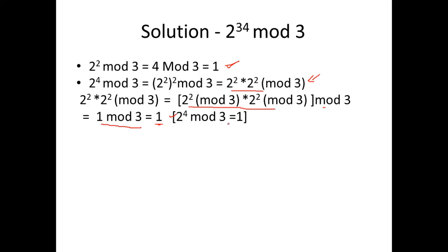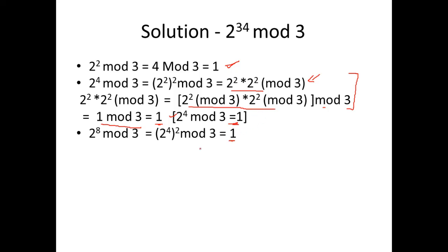Next, compute 2⁸ mod 3. It is (2⁴)² mod 3 = (2⁴ × 2⁴) mod 3. By the multiplication property: (2⁴ mod 3) × (2⁴ mod 3) mod 3 = 1 × 1 mod 3 = 1. So 2⁸ mod 3 = 1. Continuing, 2^16 mod 3 = (2⁸ × 2⁸) mod 3 = (2⁸ mod 3) × (2⁸ mod 3) mod 3 = 1 × 1 mod 3 = 1.